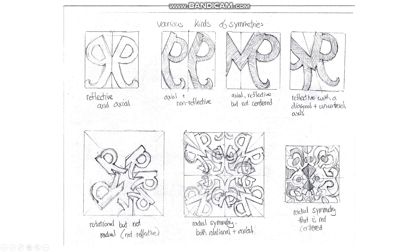Rotational symmetries are defined as symmetries where, instead of things repeating on either side of an axis, they repeat going around a center point. How many times around the center point depends on how you do it — if you did it any less than three, it really wouldn't be rotational at all; it would just be axial. The difference between rotational and radial is that radial has to also incorporate axial symmetry. A rotationally symmetrical design does not have to be symmetrical on any axis — like this one is not really symmetrical on any axis; there's some repetition, but it's not balanced by flipping it on those axes.